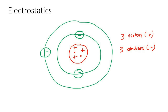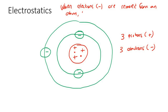Let's make a summary of what we just learned. When electrons, which are negative, are removed from an atom, the atom becomes more positive.